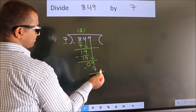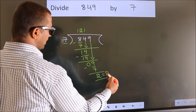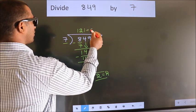No more numbers to bring it down. So we stop here. This is our remainder. This is our quotient.